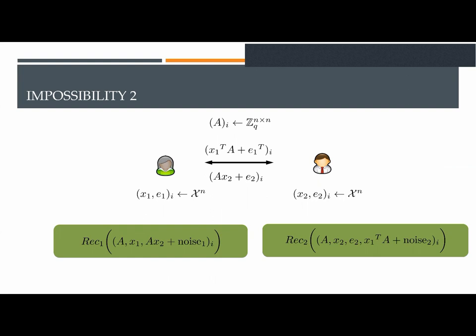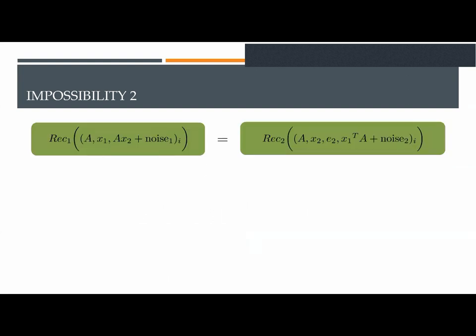This means that it depends only on the matrices A, on the secret x, and the messages received that have the form A·x2 plus noise. If the protocol achieves key agreement, then it must be the case that the two reconciliation functions, REC1 and REC2, agree on the corresponding input.